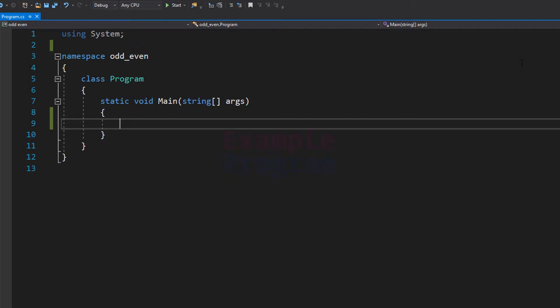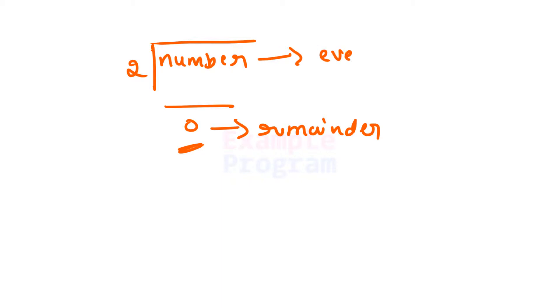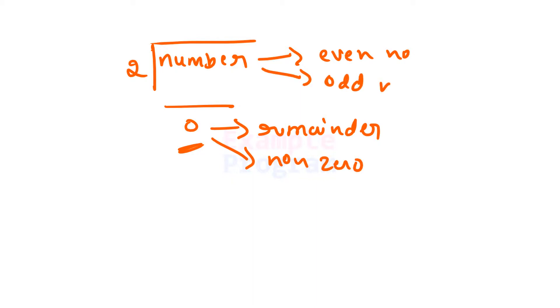Now how can we say that a number is even or odd? If you divide a number by 2 and you get a remainder of 0, then this number is said to be an even number. If the remainder is a non-zero value — which is 1 — then this number is said to be an odd number.